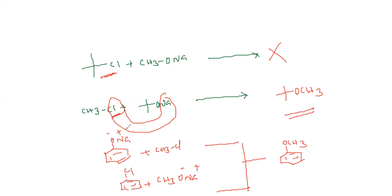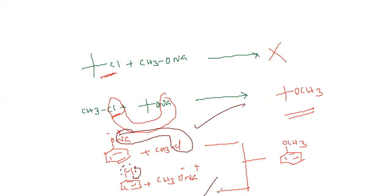In the first reaction, loss of NaCl is possible — this is favorable. But in the second case, chlorobenzene involves resonance, so it is not favorable. The first route is the correct preparation of anisole.